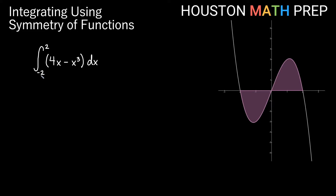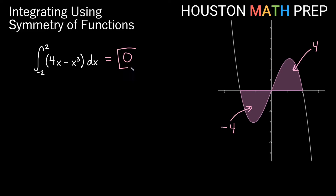Now for the definite integral from negative 2 to 2: we know the integral from negative 2 to 0 is negative 4 and from 0 to 2 is positive 4. Since we have the same area above and below the axis, these cancel and the total integral equals 0.